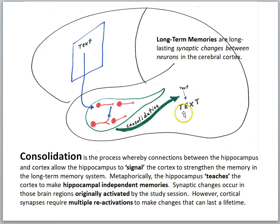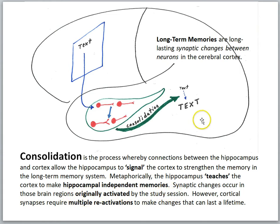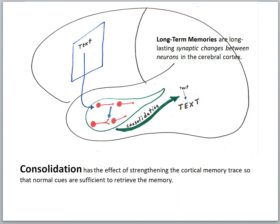Strong memories require multiple consolidation events. If we just study once, we are not strengthening the memory to its fullest extent. The brain regions originally activated by the study session are important here — we call that the reactivation hypothesis: the brain regions involved in processing information also take part in storing long-term memories for that information. Consolidation has the effect of strengthening the cortical memory trace so that normal cues are sufficient to retrieve the memory, integrating new information into our semantic memory system.